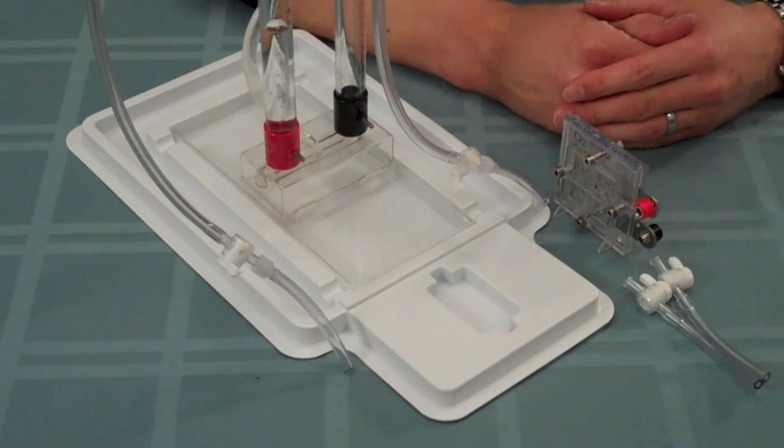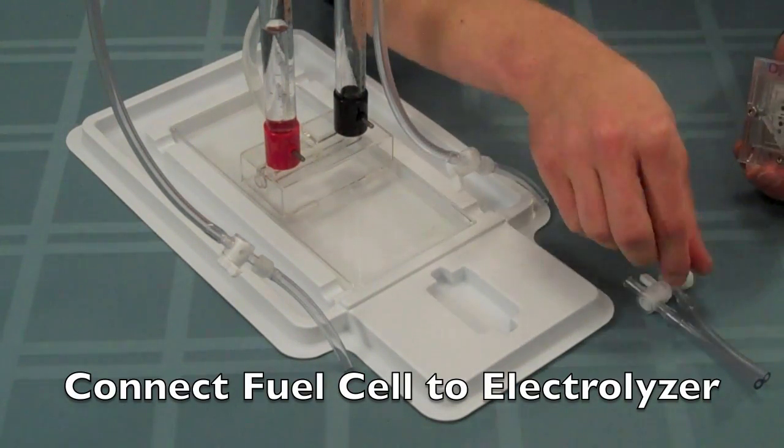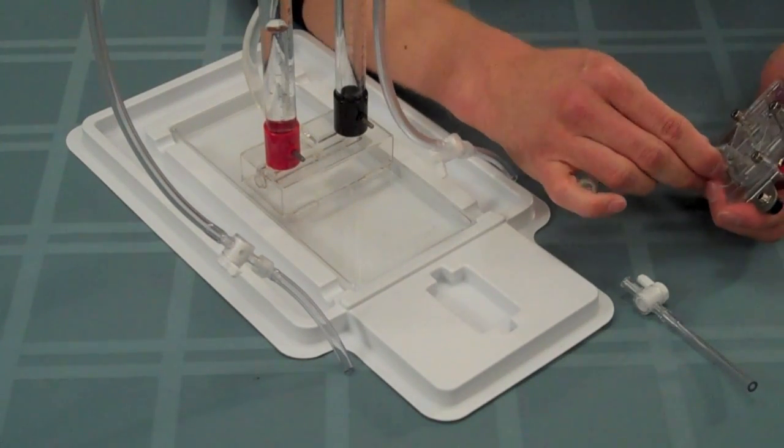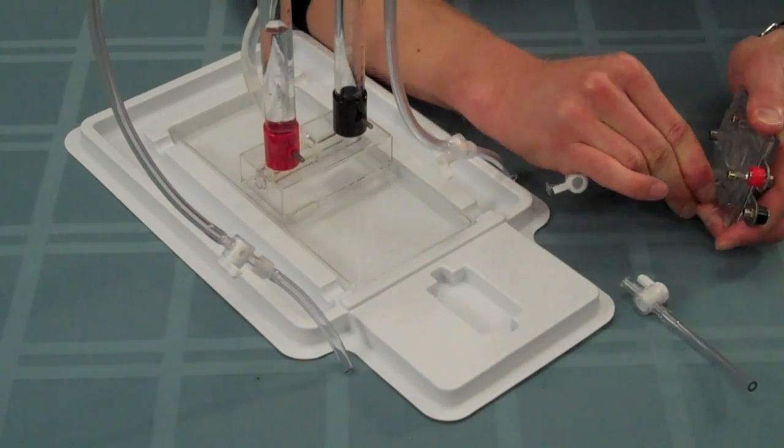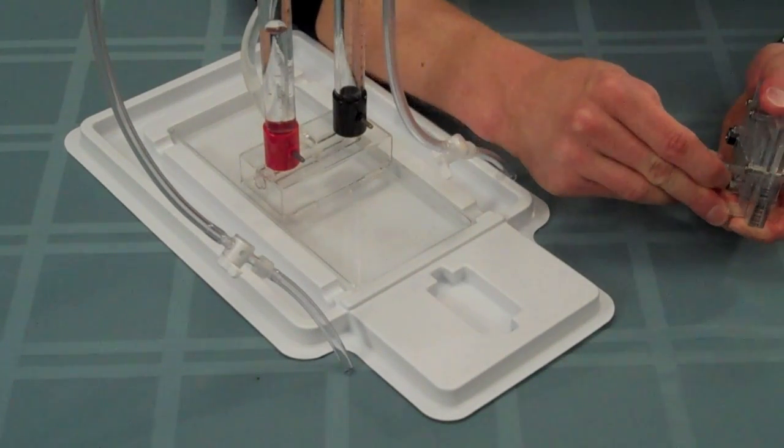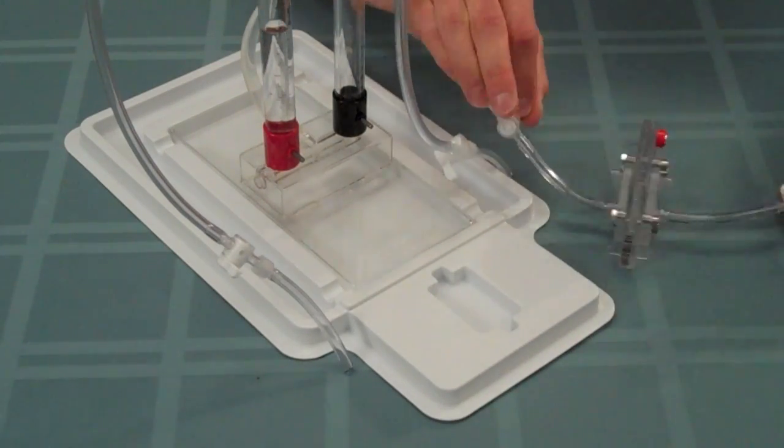If there are no leaks in the system, we can go ahead and connect the fuel cell to the electrolyzer. Start by taking these short purge valves and connecting them to the bottom ports on both sides of the fuel cell. You also want to make sure that both of these valves are in the closed position.